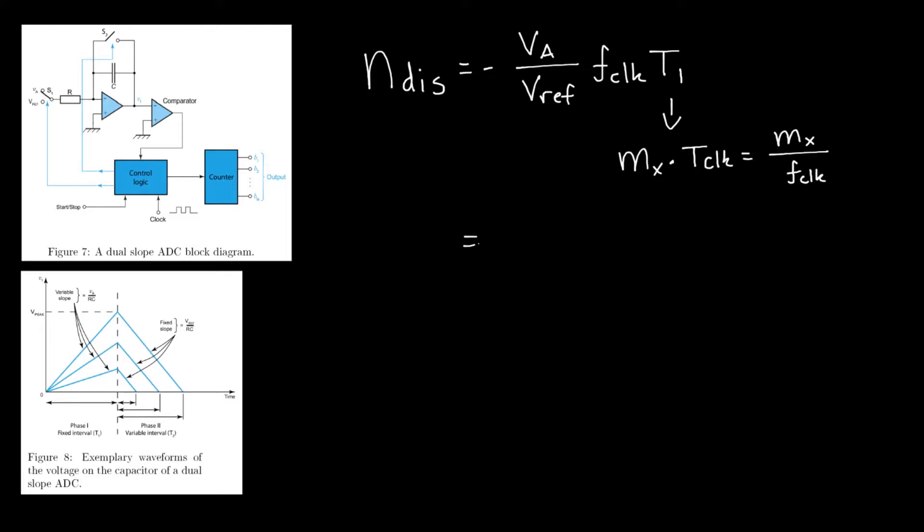If we substitute that definition you will get that the number of discharge clock cycles will be negative VA over VREF times the maximum number of clock cycles that we can count.